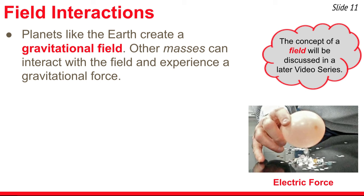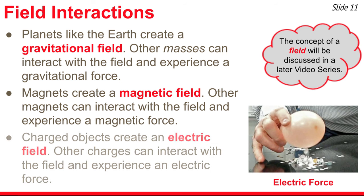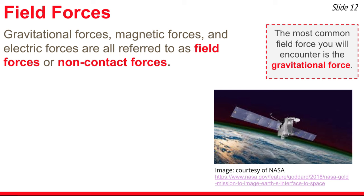Now we'll spend a few moments talking about field forces or field interactions. Planets like the Earth can create a gravitational field, so any mass that enters this field will interact with it and experience a gravitational force. Magnets create a magnetic field — any other magnet in this field interacts with it and experiences a magnetic force. Charged objects create an electric field — other charged objects entering this field interact with it and experience an electric force. So planets, magnets, and charged objects are the sources of field interactions, and these three — gravitational, magnetic, and electric forces — are all referred to as field forces.